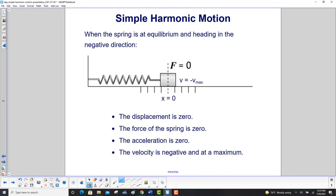When the spring is at equilibrium and heading in the negative direction, the displacement is zero, you're back to the equilibrium point. The force of the spring is zero. F is equal to minus kx. The acceleration is zero. And now your velocity is negative and at a maximum. So the velocity is always going to be maximum at the equilibrium point. Because the force was pulling it this way, continually accelerating it and making it go faster. But once it crosses the equilibrium point, the force switches direction. It's now slowing it down. So your maximum velocity is at equilibrium, regardless of which direction you approach it from.